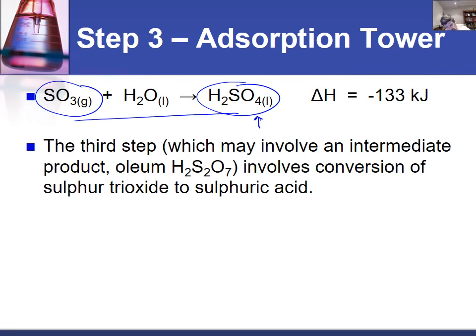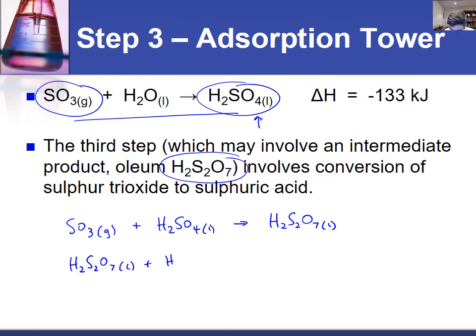And so one of the alternatives to this is to actually produce this intermediate step, this oleum. The easiest way to do that is to take the sulphur trioxide and react it with some already formed sulphuric acid. This is going to give us our oleum. And of course from here the oleum can then be added to water in order to form sulphuric acid.